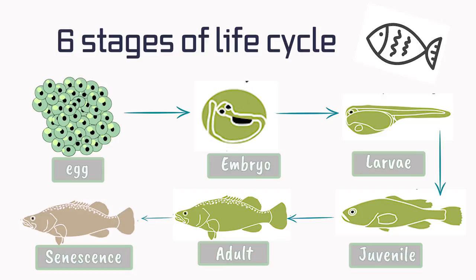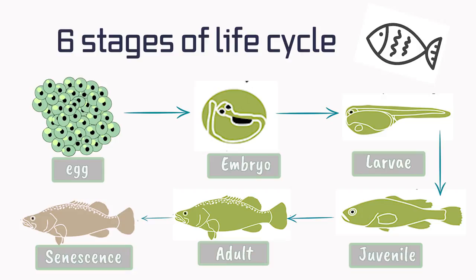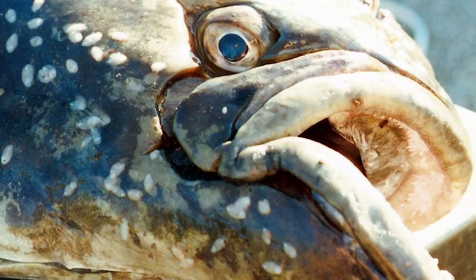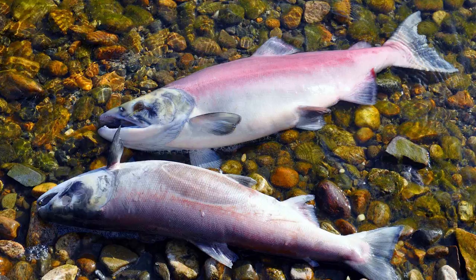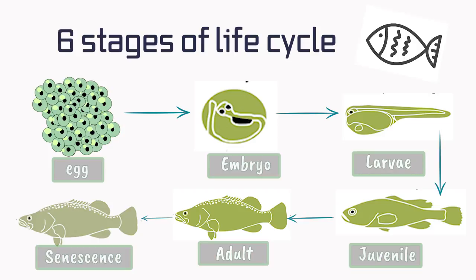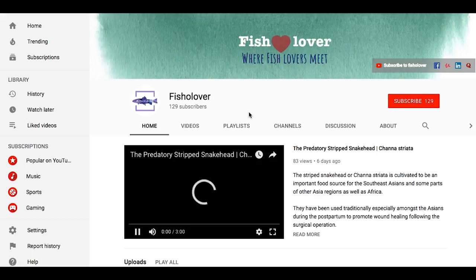The final stage is senescence, in which fish will stop reproducing due to old age. The growth rate slows down, and this stage may last for only a few hours — as in salmon — or might be several years, such as in sturgeon. That's how a fish undergoes a full cycle of life.